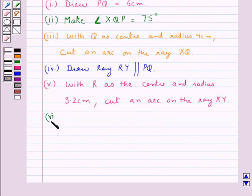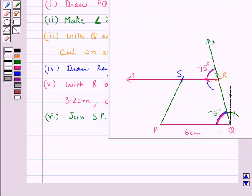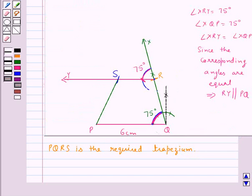Then next, we join SP. So this PQRS is the required trapezium. Where we have PQ equal to 6 centimeters, angle Q equal to 75 degrees, QR equal to 4 centimeters, then RS equal to 3.2 centimeters. So this completes the session. Hope you have understood the solution for this question.